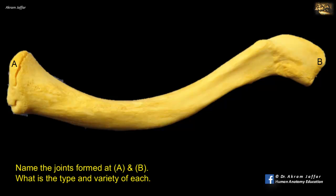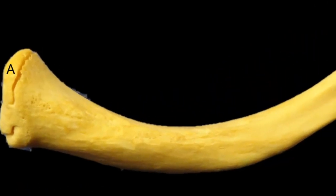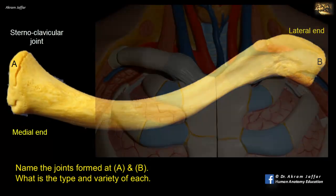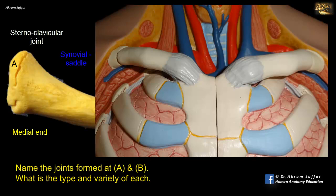Name the joints formed at A and B. What is the type and variety of each? First, we have to differentiate between the medial and lateral ends of the clavicle. The medial end is rounded while the lateral end is flat. The joint at A is the sternoclavicular joint. This is a saddle type of synovial joint between the sternal end of the clavicle on one side and the manubrium of the sternum and first costal cartilage on the other side. Unlike many other synovial joints, the articular surface here is covered with fibrocartilage instead of hyaline cartilage, and it is divided into two compartments by an articular disc.